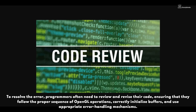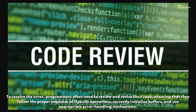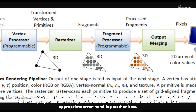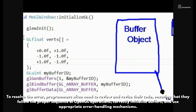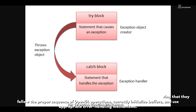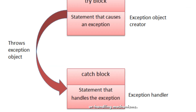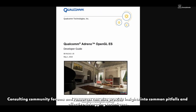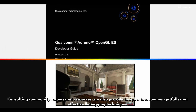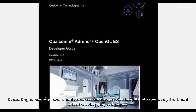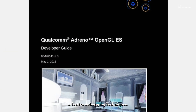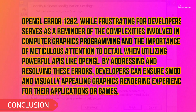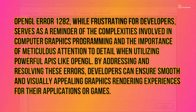To resolve the error, programmers often need to review and revise their code, ensuring that they follow the proper sequence of OpenGL operations, correctly initialize buffers, and use appropriate error handling mechanisms. Consulting community forums and resources can also provide insights into common pitfalls and effective debugging techniques.